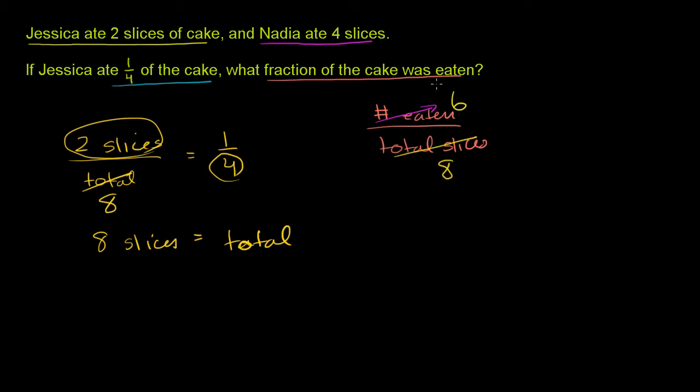So the fraction of the cake that was eaten, six eighths, but we can simplify this even more. Both the numerator and the denominator is divisible by two, so let's divide them both by two and get it into lowest terms.